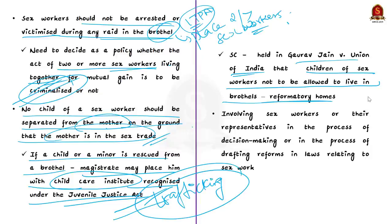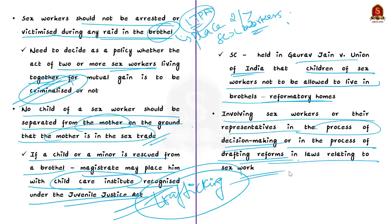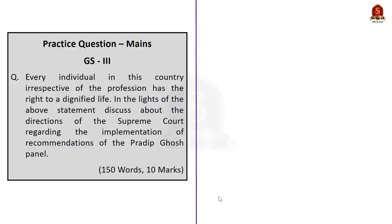Finally, the panel recommends involving sex workers or their representatives in the process of decision making and in drafting reforms in laws relating to sex work. As the purpose is to rehabilitate sex workers and improve their living conditions, their involvement in decision making will make reforms more enforceable. The government must try to incorporate this recommendation in its policy, directives, or amendments. In this discussion we saw the Supreme Court's directions, the Ghosh panel's recommendations, and the government's reservations.